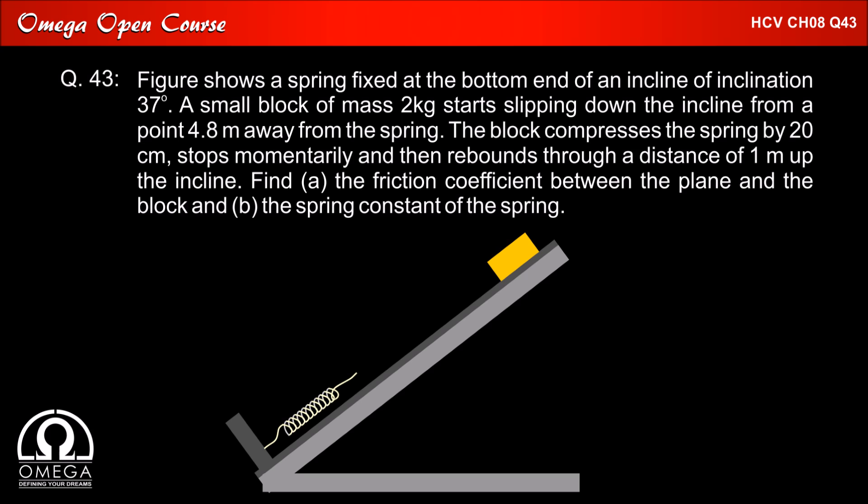The figure shows a spring fixed at the bottom of an incline of inclination 37 degree. A small block of mass 2 kg starts slipping down the incline from a point 4.8 meter away from the spring.